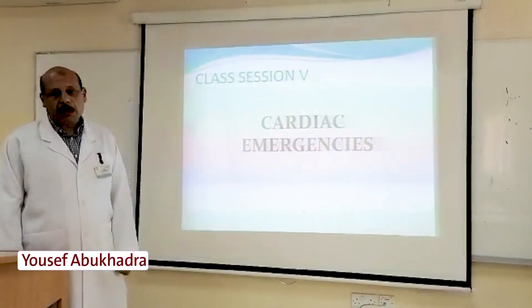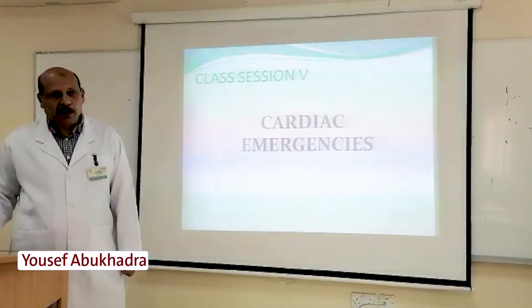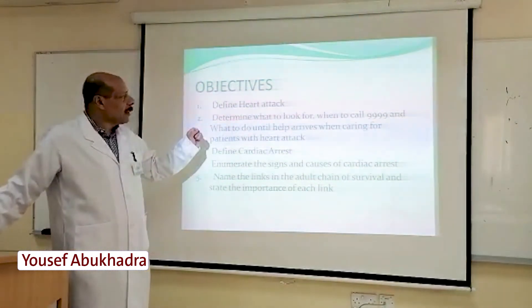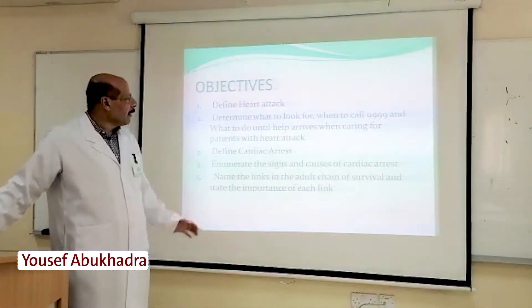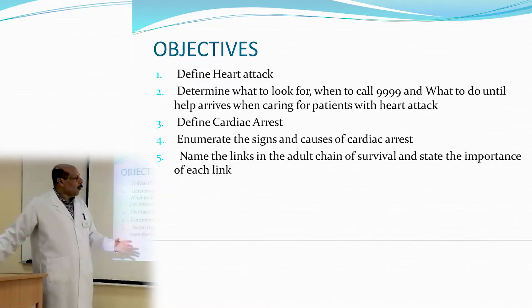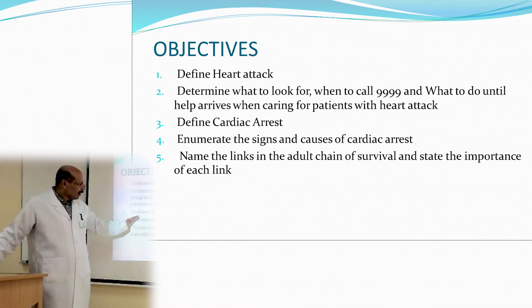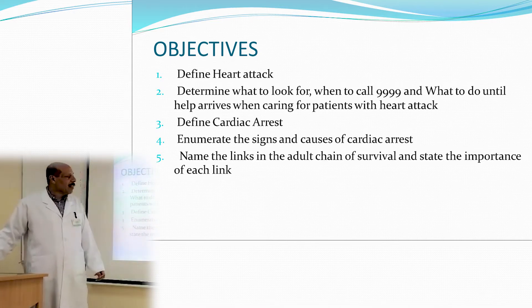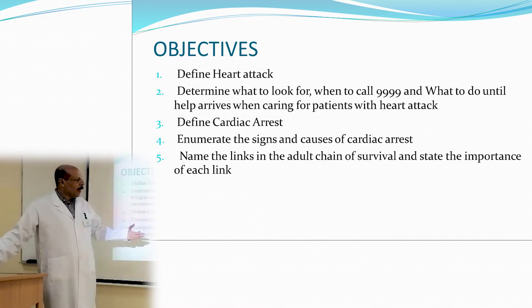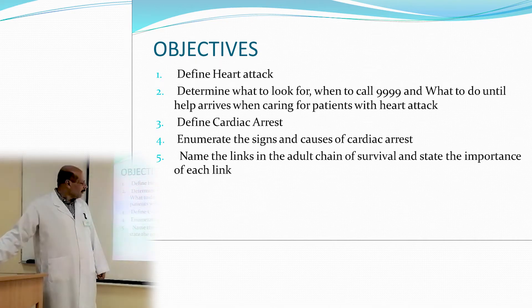This is class session 5: Cardiac Emergency. The objectives for this session are to define heart attack, determine what to look for and when to call the emergency system, and what to do until help arrives when caring for patients with heart attack. We will also define cardiac arrest, enumerate the signs and causes of cardiac arrest, and name the links in the adult chain of survival and state the importance of each link.